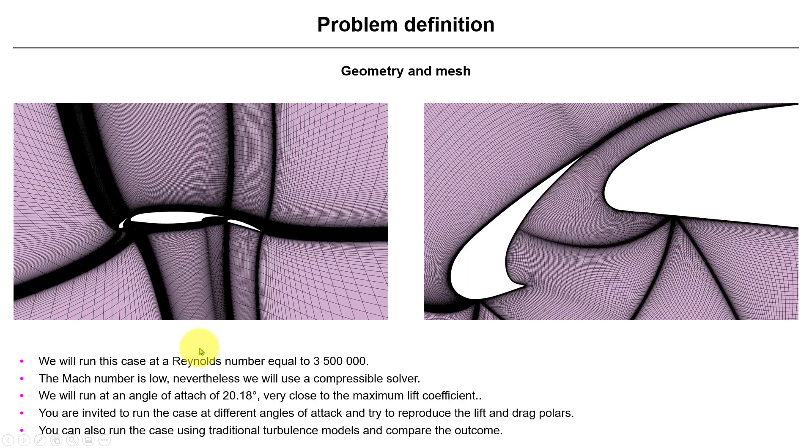Here we have a few references just to show you the price that you need to pay to resolve transition to turbulence. Look at this extremely fine mesh. The y-plus that we're talking about here is something less than 0.1, and also with good resolution in the streamwise direction.